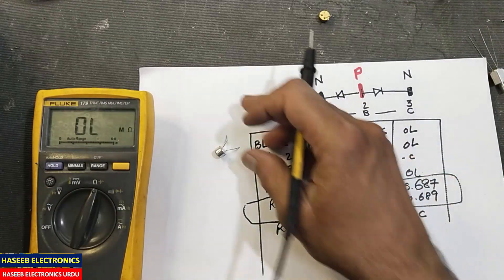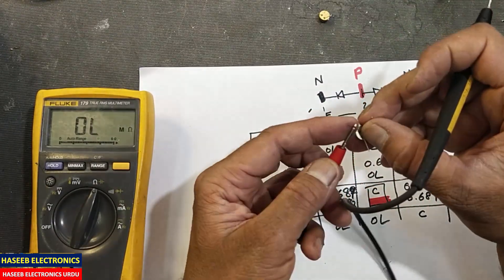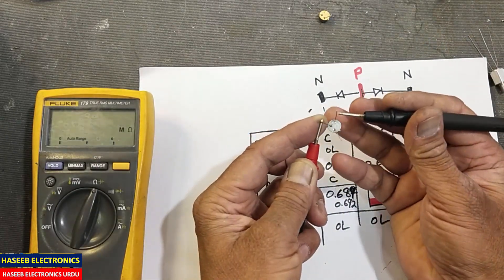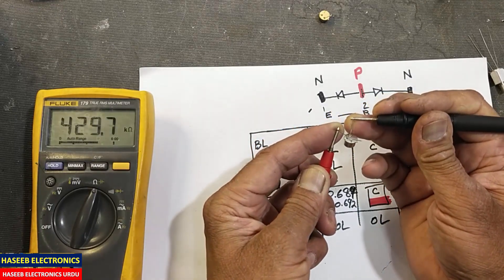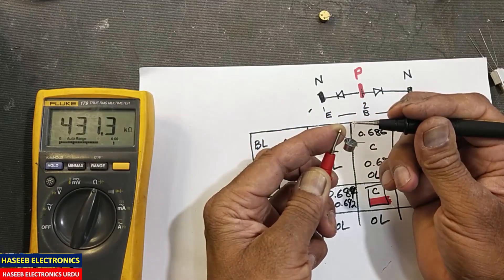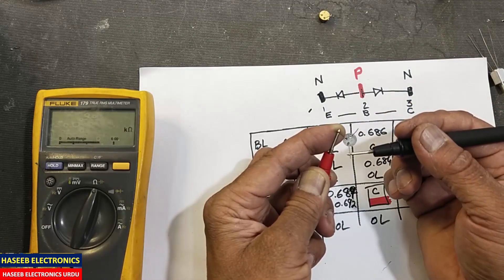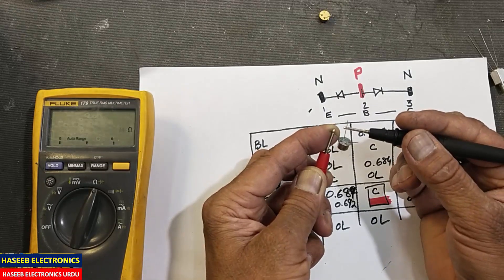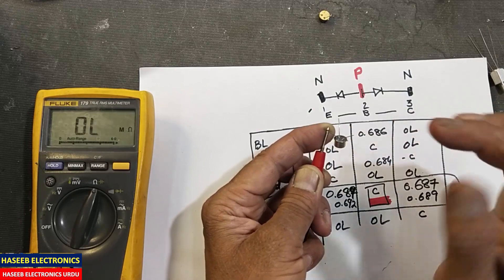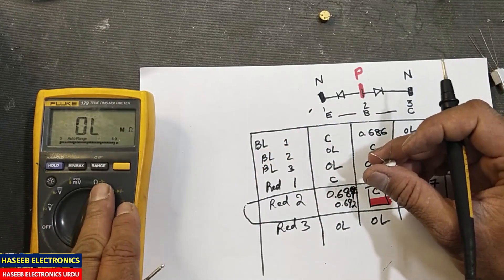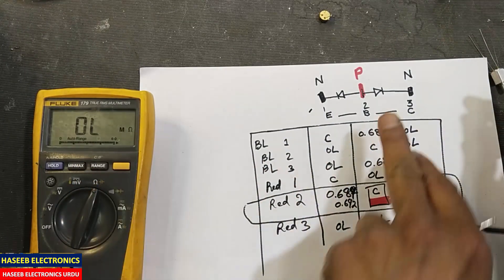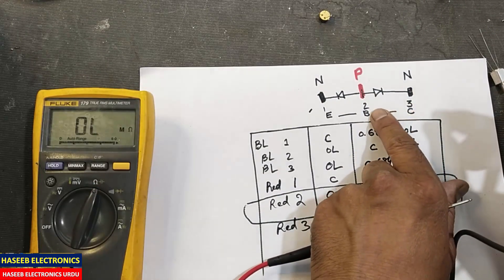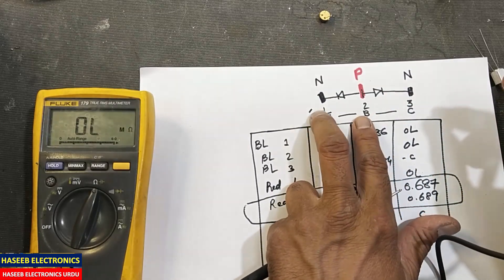You can also test with an ohmmeter. Place the probe at the center base pin. Base to collector reads approximately 429–431 kΩ; base to emitter reads approximately 450 kΩ. Base to collector always has lower resistance because the collector provides high current, so its internal resistance must be low. Base to emitter resistance must be higher. There will be a slight difference between both values.